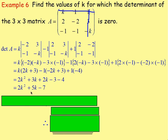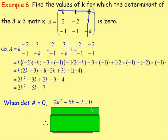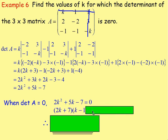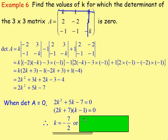That is the determinant of this matrix. Looking back at the question, we want the values of K for which the determinant is 0. So we set 2K squared plus 5K minus 7 equal to 0. Factorizing gives (2K plus 7)(K minus 1) equals 0. If 2K plus 7 equals 0, then K equals negative 7 over 2. If K minus 1 equals 0, then K equals 1. Those are our two values of K.